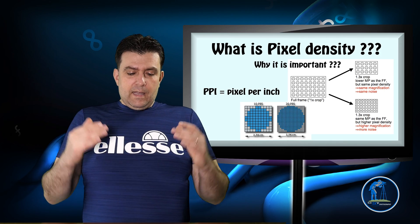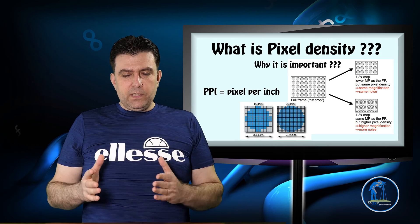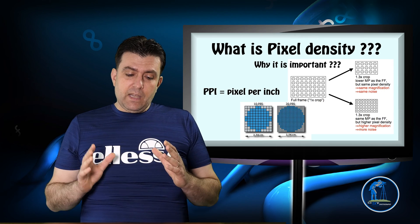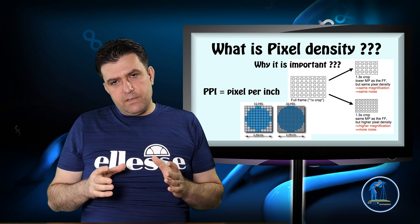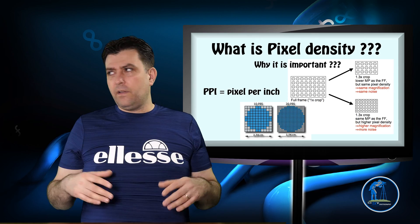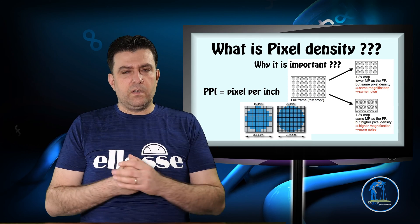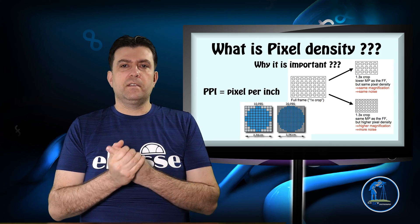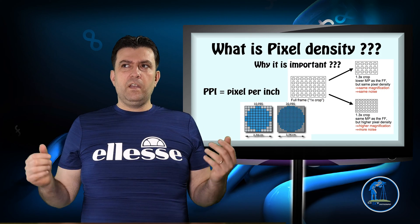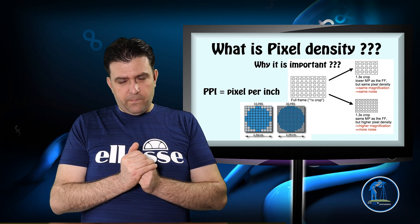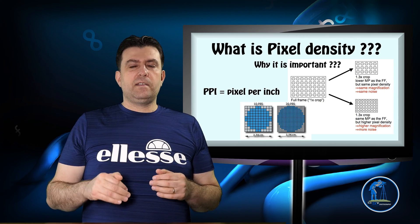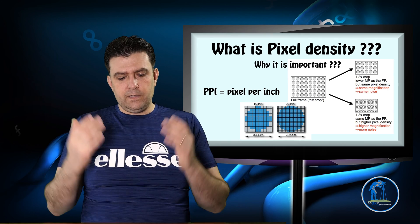So like I said, pixel density is important in some situations and not in others. But when you seek image quality, sharpness, and detail, pixel density is something you must consider. If you have the money for a Sony a7R II or Canon 5DSR — cameras with high pixel density in a large sensor — that's a great option. But if you want extra reach from the crop factor and more detail and sharpness, an APS-C sensor without an anti-aliasing filter is the way to go.